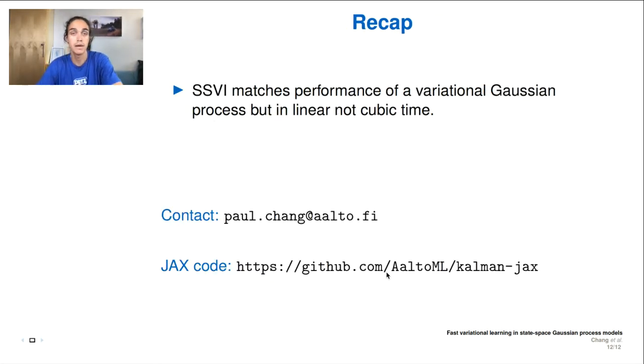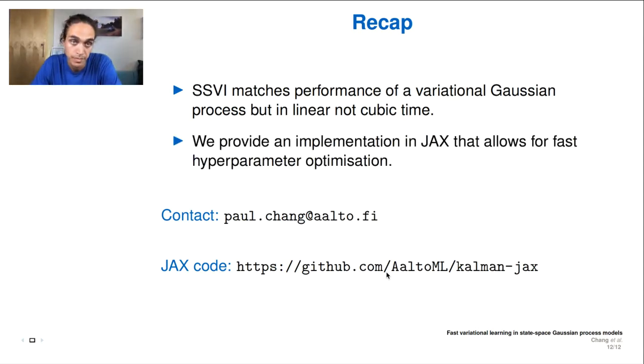So just quickly to recap, the SSVI is a sequential variation of the CVI, and it performs variational inference for Gaussian process models. But the big difference is that we are now linear and not cubic in time, which means that we can scale to much larger data sets. And second, previously, performing automatic differentiation for hyperparameter optimization was thought as complicated or slow because of implementation of the computational graph. But we show that we can use special features in JAX that allows for fast hyperparameter optimization.